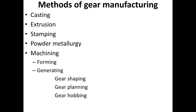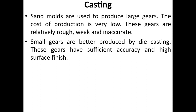Methods of gear manufacturing include casting, extrusion, stamping, powder metallurgy, and machining. Under machining there are two methods: forming and generating. Generating is split into three types: gear shaping, gear hobbing, and gear planning.